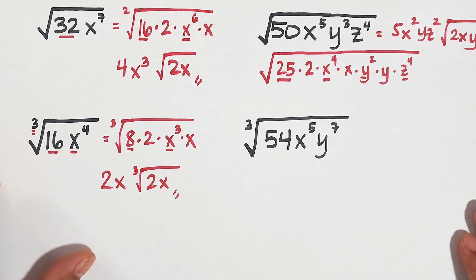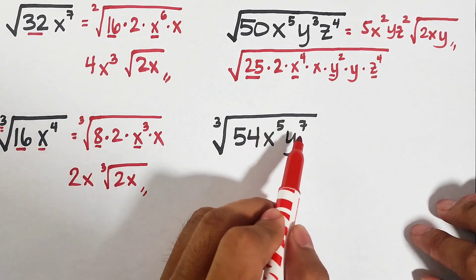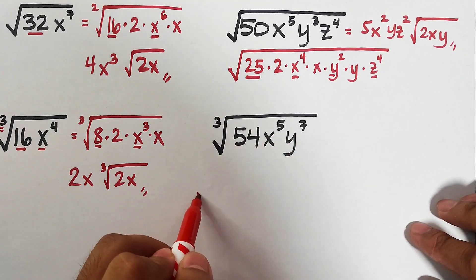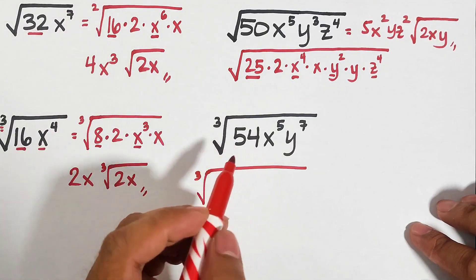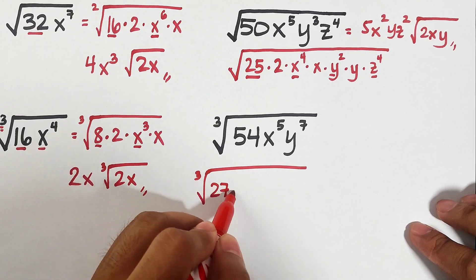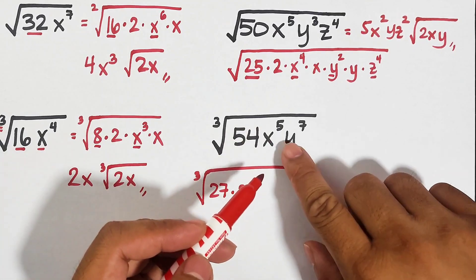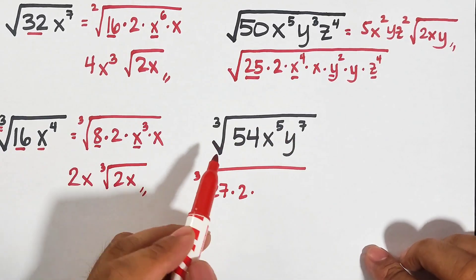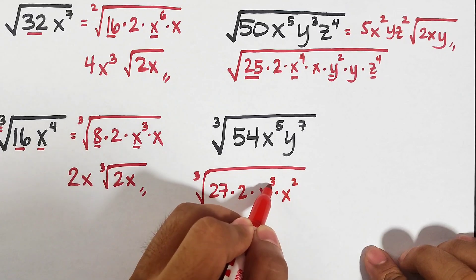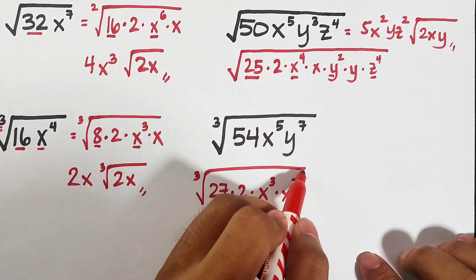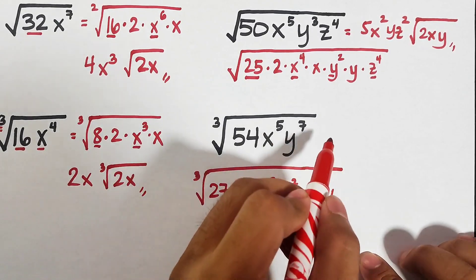Now let's move on. What we have is the cube root of 54x to the fifth power y raised to the seventh power — simplify. Factor the radicands: 54 is not a perfect cube, but we can factor it as 27 times 2, since 27 is a perfect cube. For x to the fifth power, find an exponent divisible by 3: x cubed times x squared, because 3 plus 2 is 5. For the y variable, we have y raised to the sixth times y, because 6 is divisible by 3.